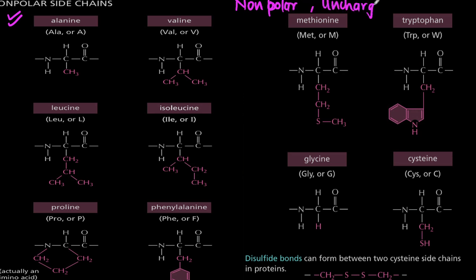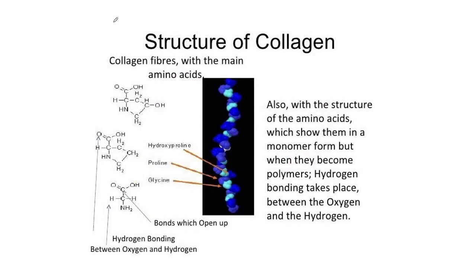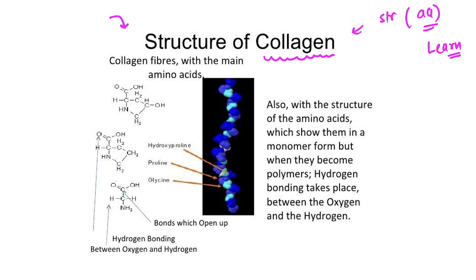The non-polar uncharged amino acids — you can see the names listed. As mentioned, cysteine forms disulfide bonds. If I talk about collagen structure — collagen fibers have the main amino acids hydroxyproline and glycine. When amino acids are in monomer form but become polymers, hydrogen bonding occurs between oxygen and hydrogen atoms.